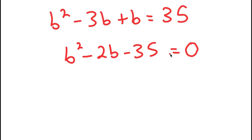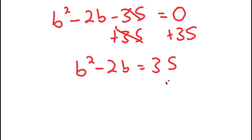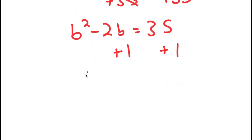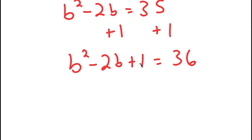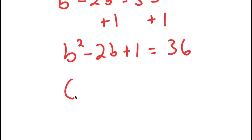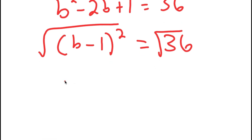Actually, let me add 35 back — we have B squared minus two B equals 35. Before solving, I'll add one on both sides, giving B squared minus two B plus one equals 36. The reason I did that is because B squared minus two B plus one is the same thing as (B minus one) squared. Now I can take the square root on both sides, since the square root of 36 is a whole number. I get B minus one is equal to positive or negative six.